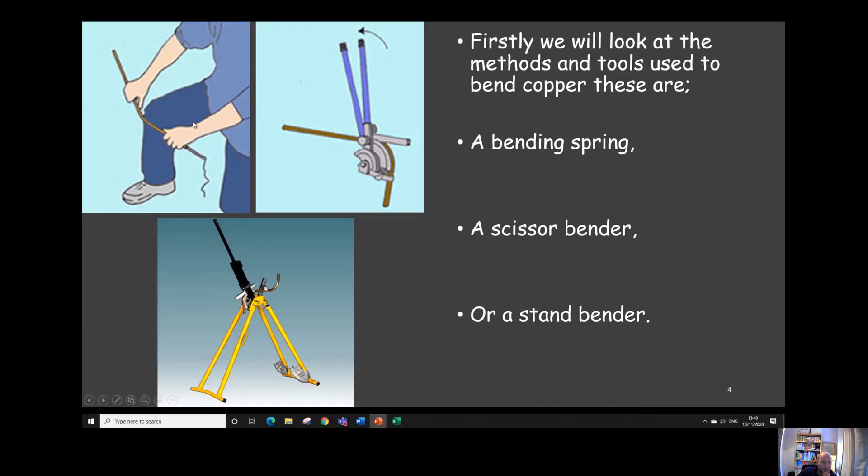A bending spring would only really you'd normally use for bending a very small diameter pipe ideally no more than 15 mil and a scissor bender would only normally bend 15 and 22 mil and a stand bender can bend a much bigger pipe up to about 40, 42 mil.